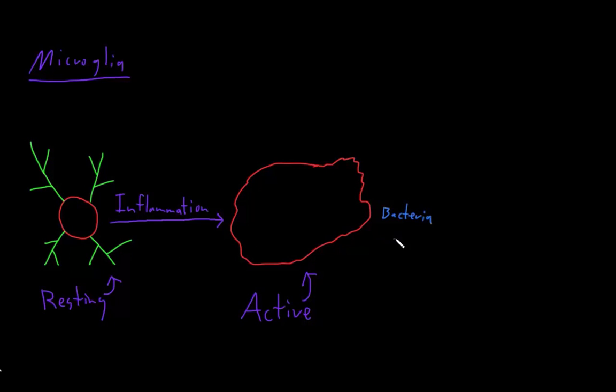Now if an active microglia finds a foreign cell like a bacteria, it can secrete substances called cytotoxic that can kill these foreign cells. For example, reactive oxygen species, or ROS, that could kill a cell like a bacteria. And secretion of cytotoxic factors is one of the main functions of microglia.